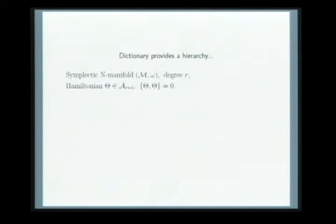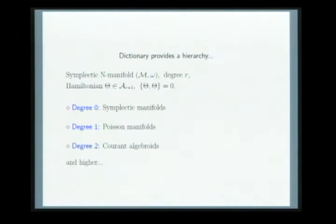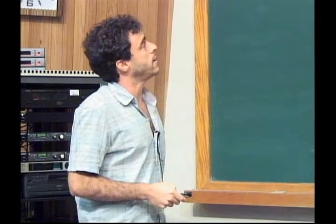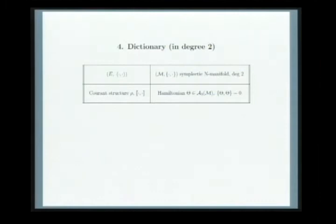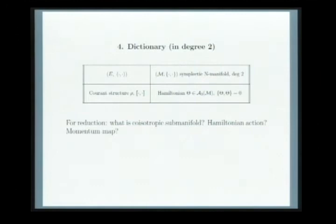I've been studying this with Cattaneo, Mehta, and Zambon. If you just look at the definition of a co-isotropic submanifold in degree two, what you naturally get is: a submanifold with a vector subbundle of E, an integrable distribution of this submanifold, and a flat partial connection along this distribution that preserves the metric of this bundle. You get all kinds of classical geometrical structures just by following this dictionary. Perhaps if you wanted to do reduction of these unfamiliar geometries, you wouldn't know where to start — but once you play with this dictionary, all kinds of classical things pop out.